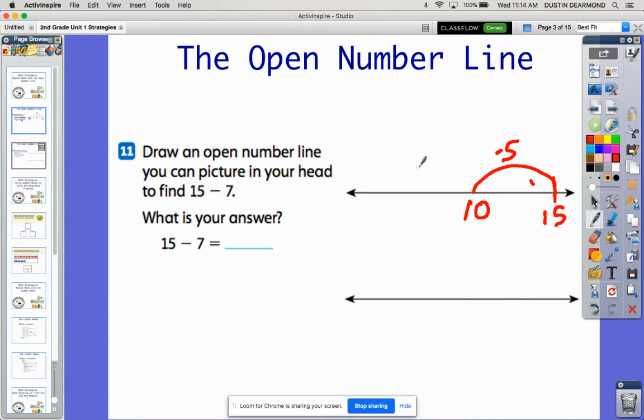But remember, we're taking away seven, so I have to jump a little bit more. I have to jump two more. And so I can jump one jump at a time if I need to, or I can jump one big jump of two. But that would take me back to nine, and then that would take me back to eight.